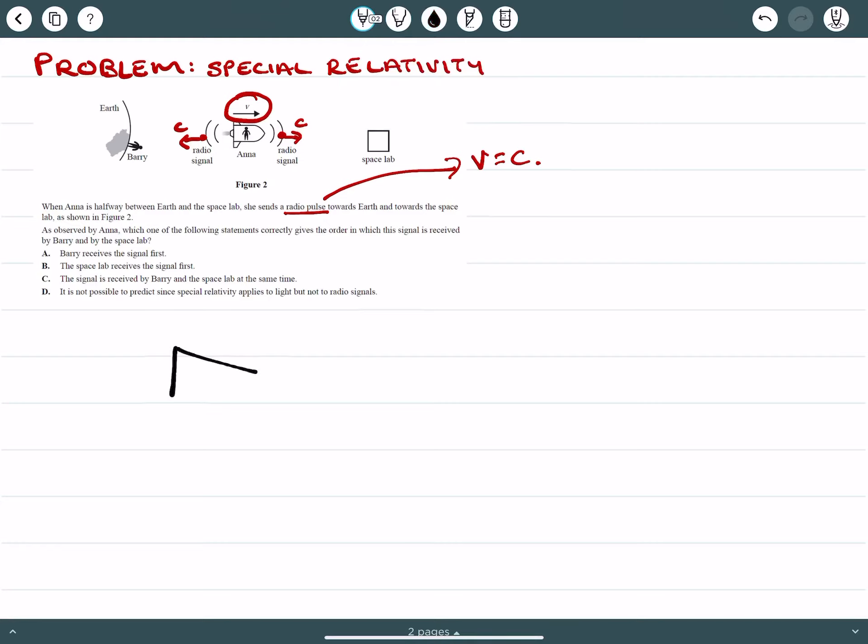So here's Anna in her spacecraft. Here's Barry. And here's the space lab. So we'll just draw it like so. And this is initially. And what we'll do is we'll have a look at one photon traveling at the speed of light and one photon traveling at the speed of light towards Barry. Now, at this point, they've got the same distance.